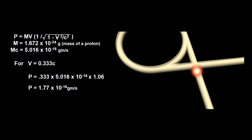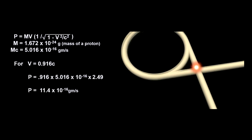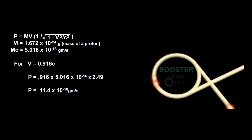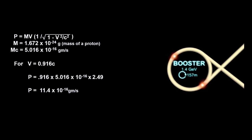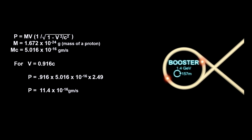We can use this as the starting momentum. If we had used Galilean transformations, we would be off by 5%, and the linear accelerator would not work. The first booster accelerates the protons to 91.6% of the speed of light. This speed more than doubles the momentum.